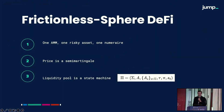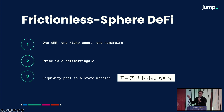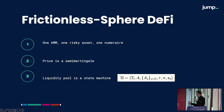Consider frictionless sphere DeFi — the platonically perfect world where we have one AMM, one risky asset, one numeraire, a base asset in which everything is denominated. The risky asset — this can generalize to multiple risky assets, but we'll consider one for the time being. Price is a semi-martingale; you can think of it as a martingale for our purposes, with small technical distinctions based on fees. We'll model the liquidity pool as a state machine with states, admissible actions, a set of actions, some transition, some payoff, and some initial state.